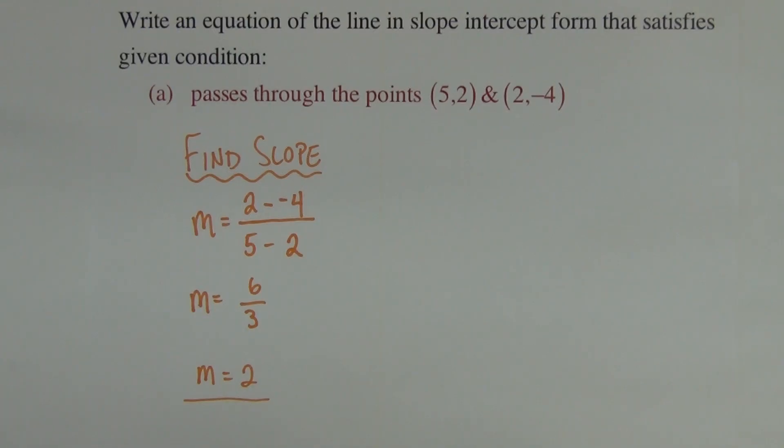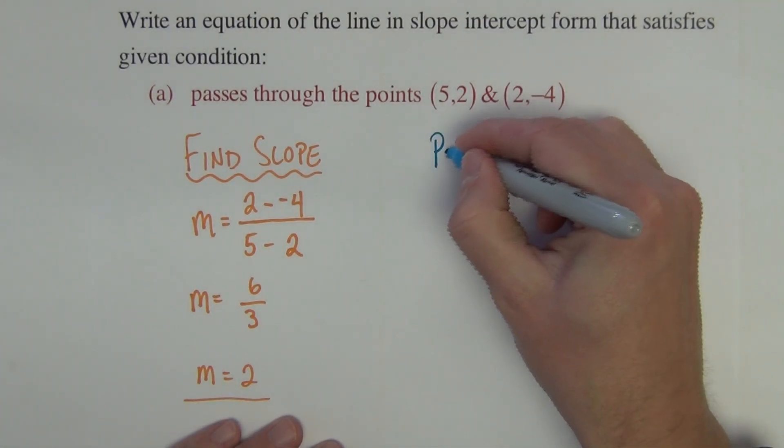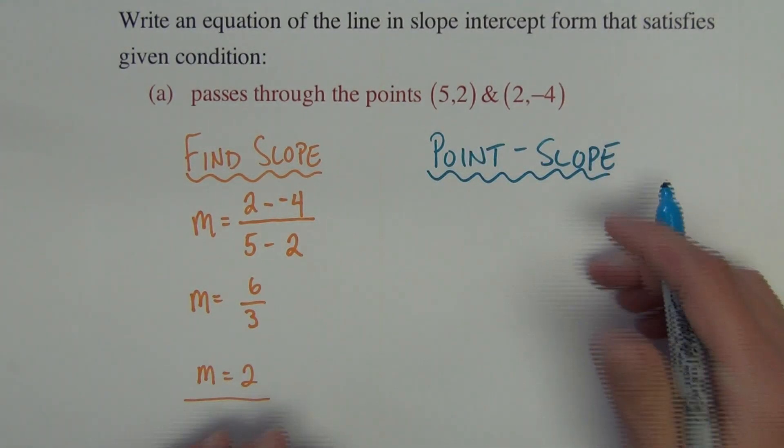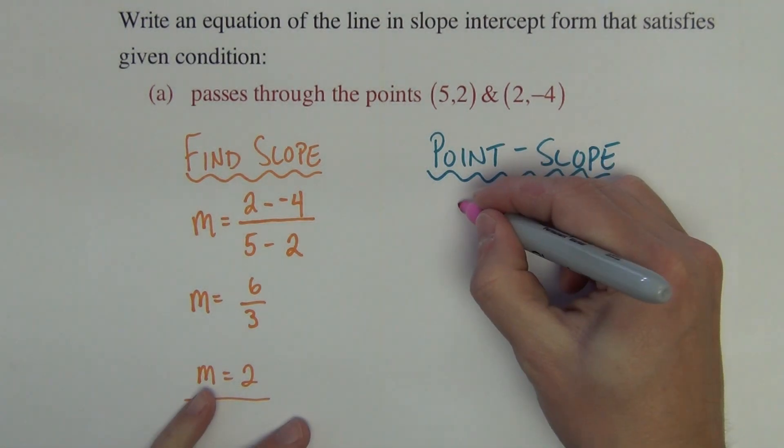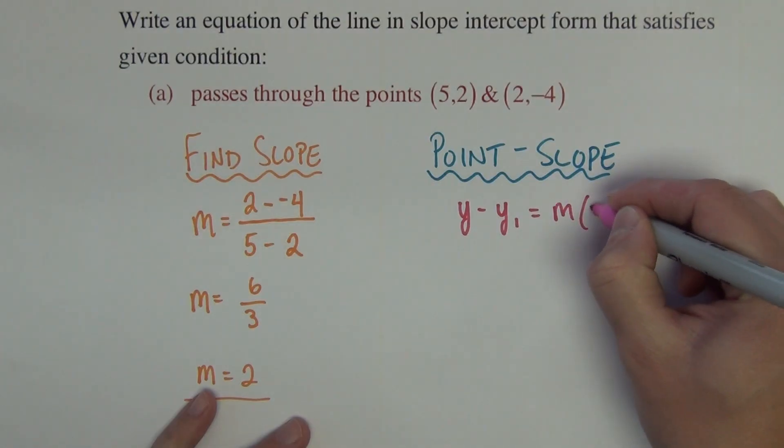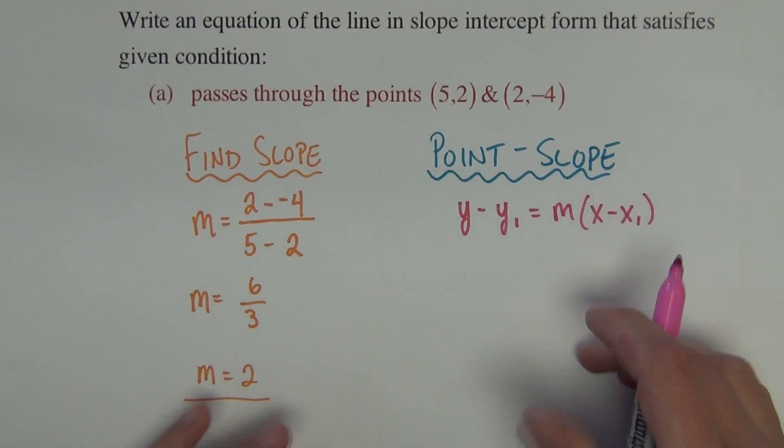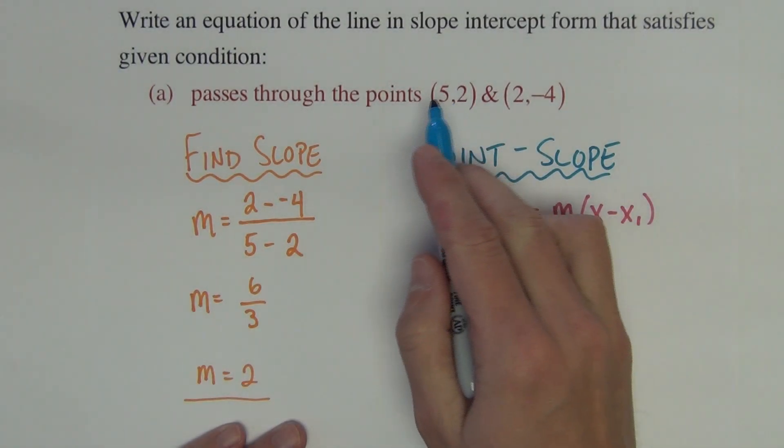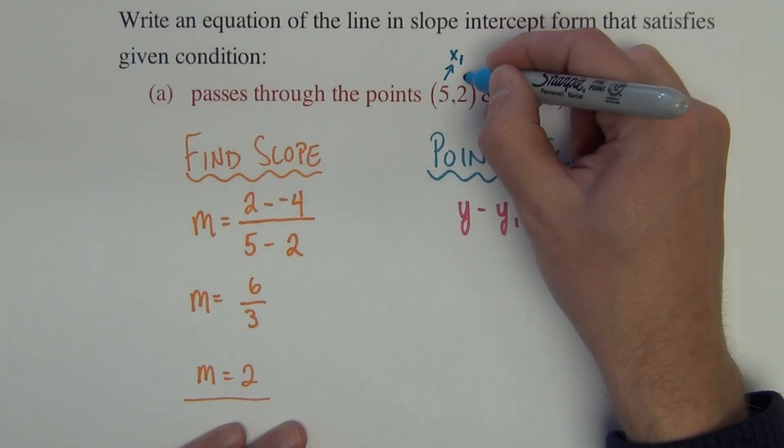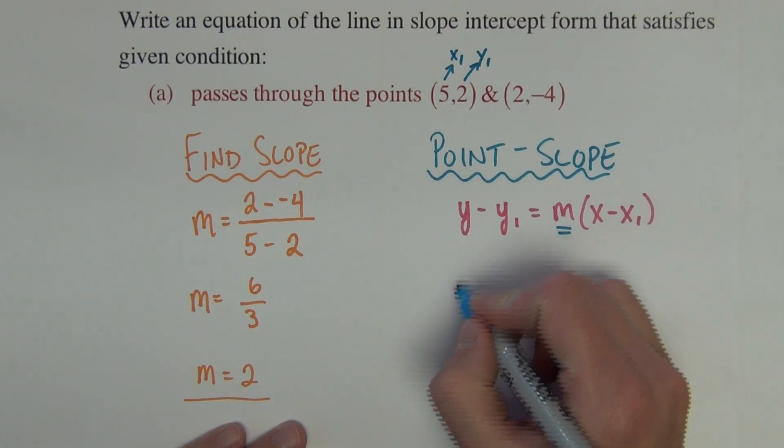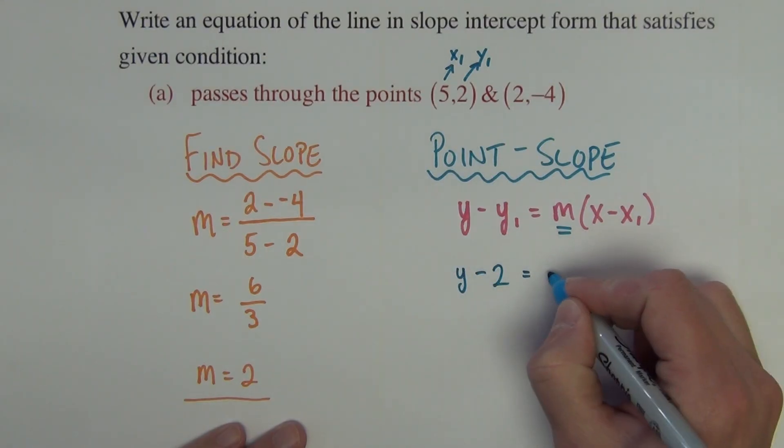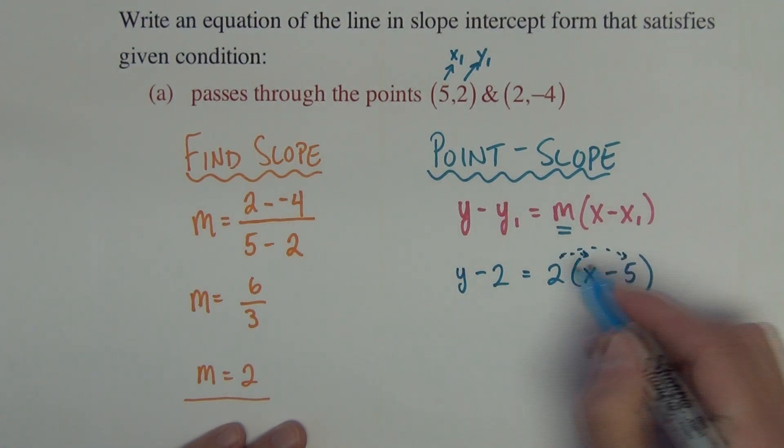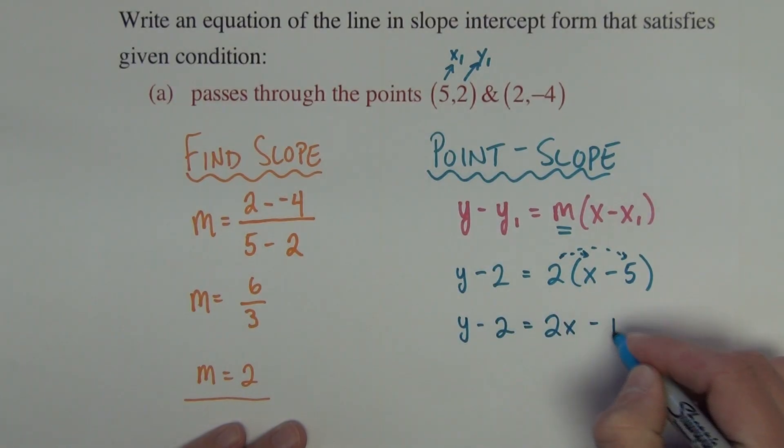Not the final answer, but to find the equation of the line we're going to use point-slope. Point-slope is one of those formulas that you definitely want to know, that you want to have on your note card if you need. Point-slope is y minus y1 equals m times x minus x1. We have the slope and we pick any one of these points to be the x1, y1. So we substitute in y minus 2 equals 2 times x minus 5. We distribute the 2 and get y equals 2x minus 8.